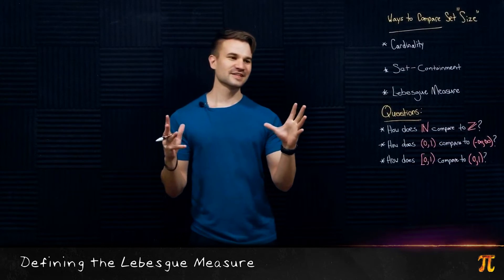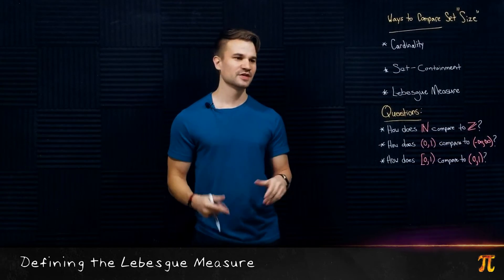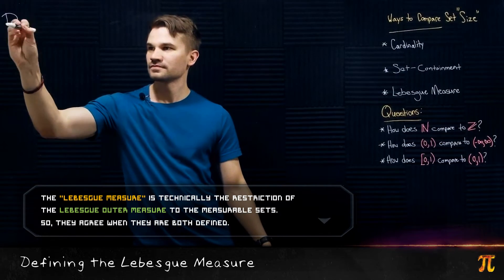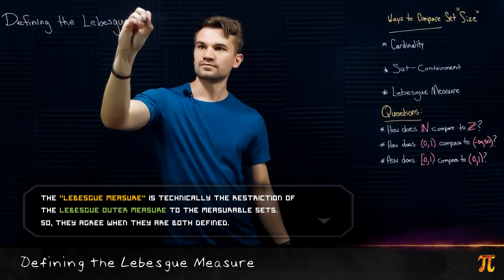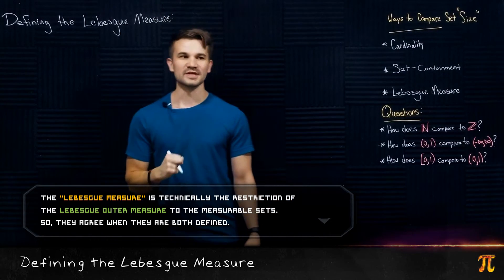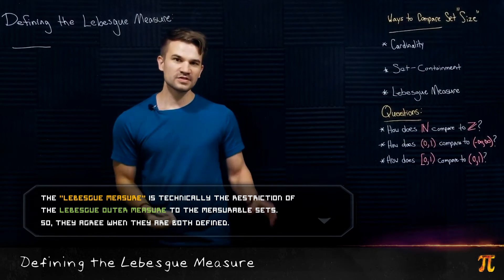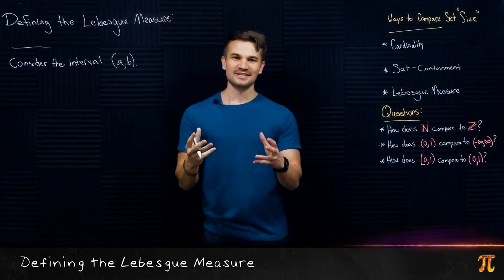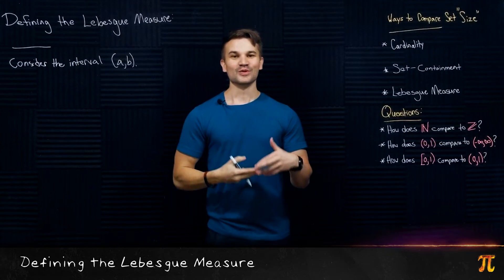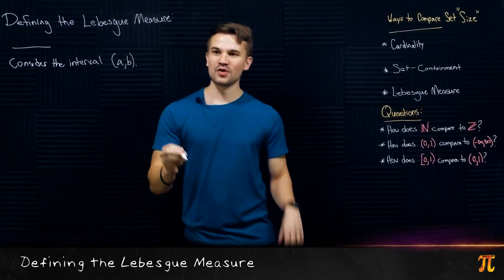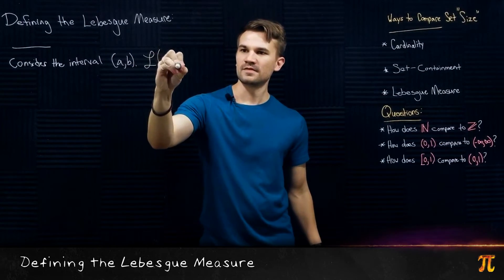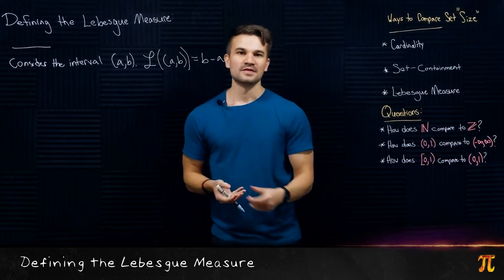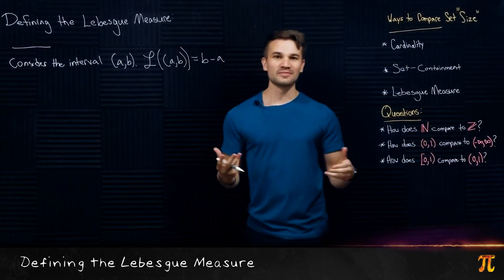So let's define the Lebesgue measure. Now technically I'll be defining what's called the Lebesgue outer measure in this video; that distinction is not something worth getting into right now. So here's what we're calling the Lebesgue measure. Now let's look at an open interval A to B. It's pretty simple what the Lebesgue measure of this interval will be — we want the Lebesgue measure to be a notion of length. So the Lebesgue measure of this interval is B minus A, exactly what you would expect. That's the length of this interval.